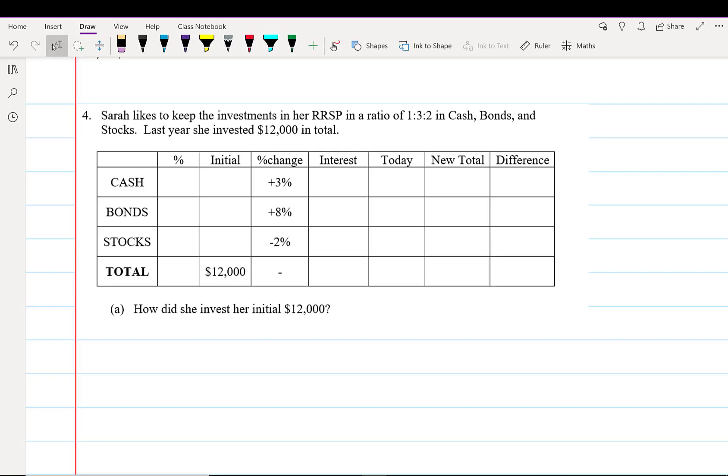Hi, now we're going to do a more complicated example. Sarah likes to keep the investments in her RRSP (that's a registered retirement savings program) in a ratio of 1:3:2 in cash, bonds, and stocks. Last year she invested $12,000 in total. How did she invest her initial $12,000?